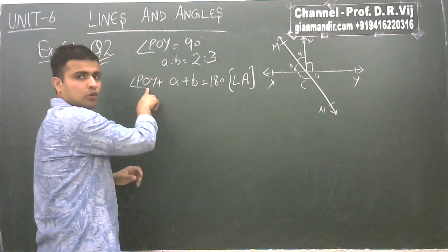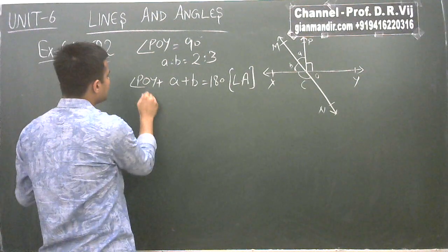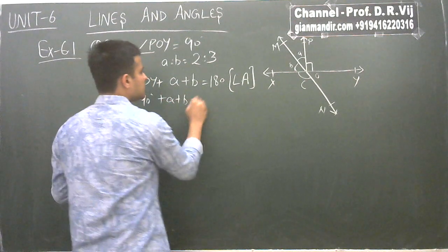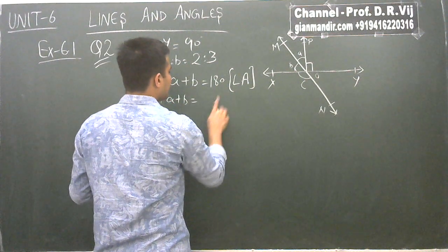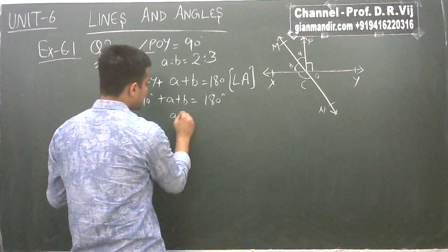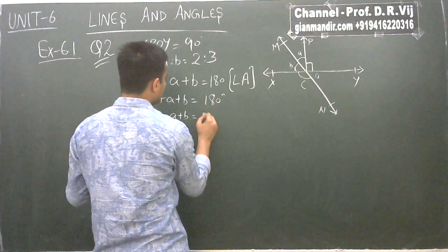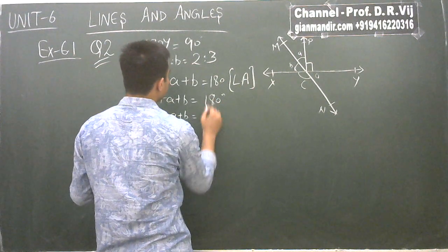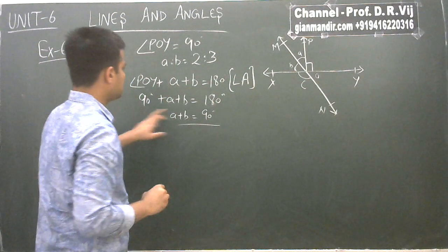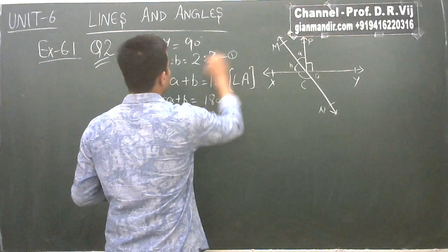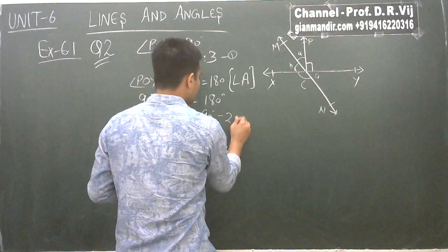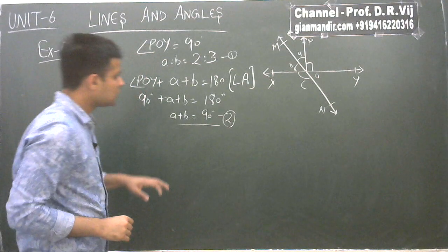We know POY. POY is 90 degrees, so 90 plus A plus B equals 180 degrees. Taking 90 to the other side, it becomes A plus B equals 90 degrees. 180 minus 90 is 90. This is our first result. We have been given that A ratio B equals 2 ratio 3.